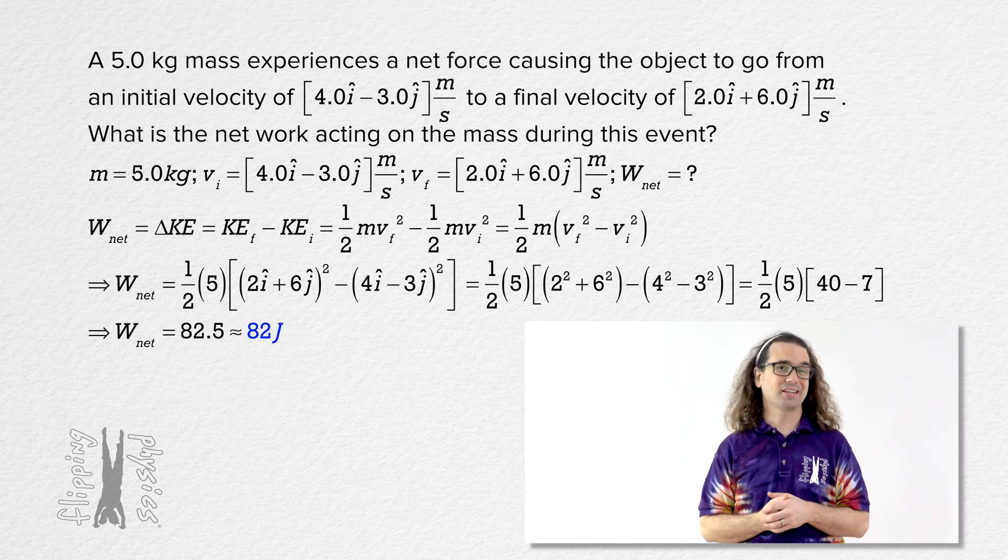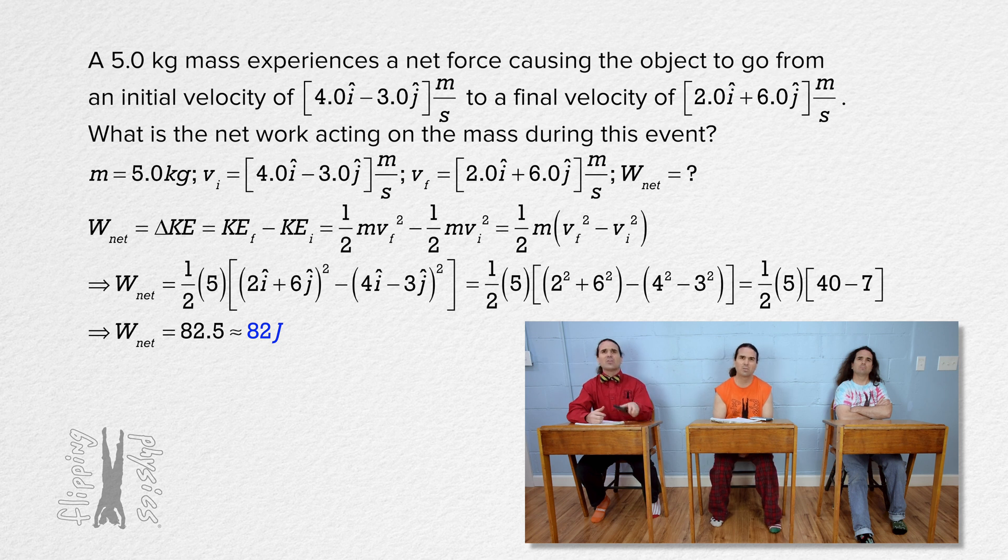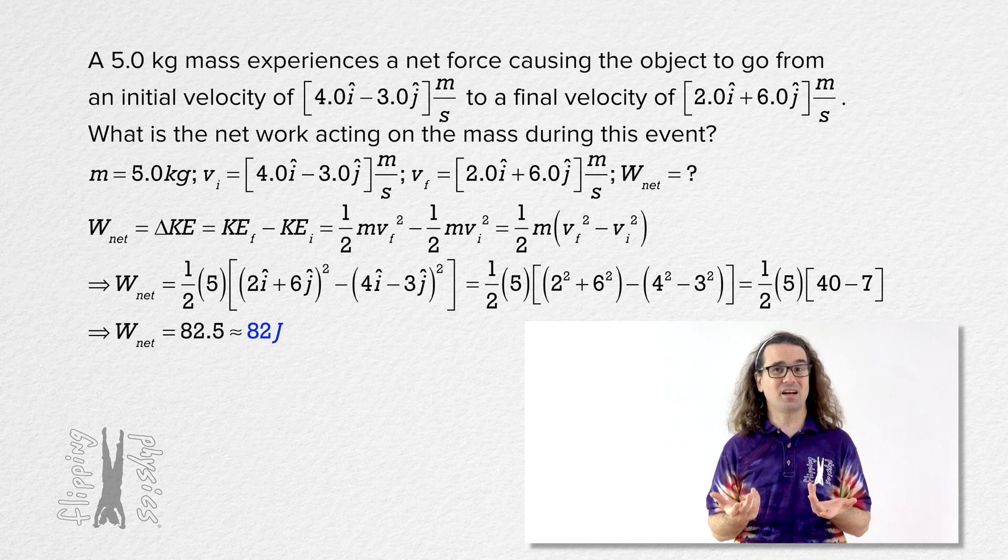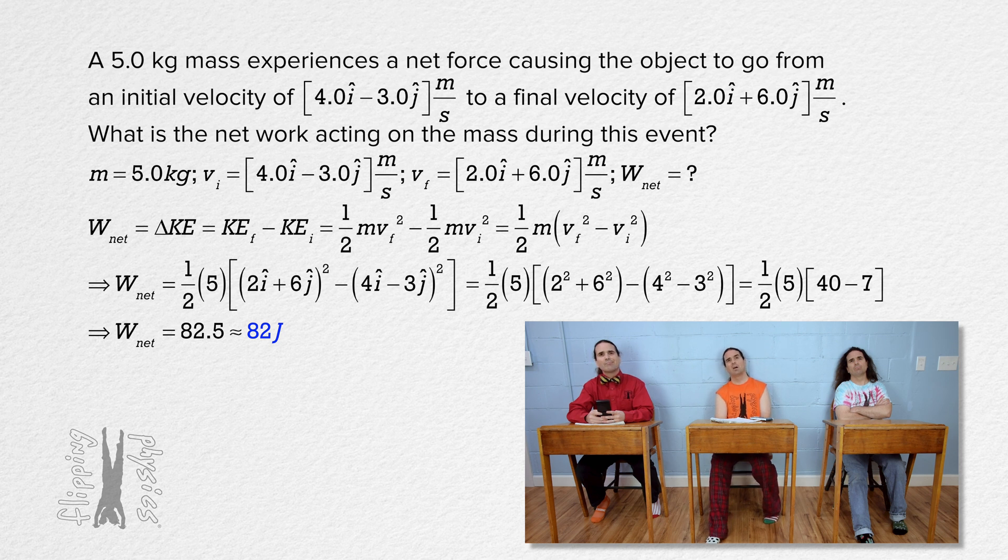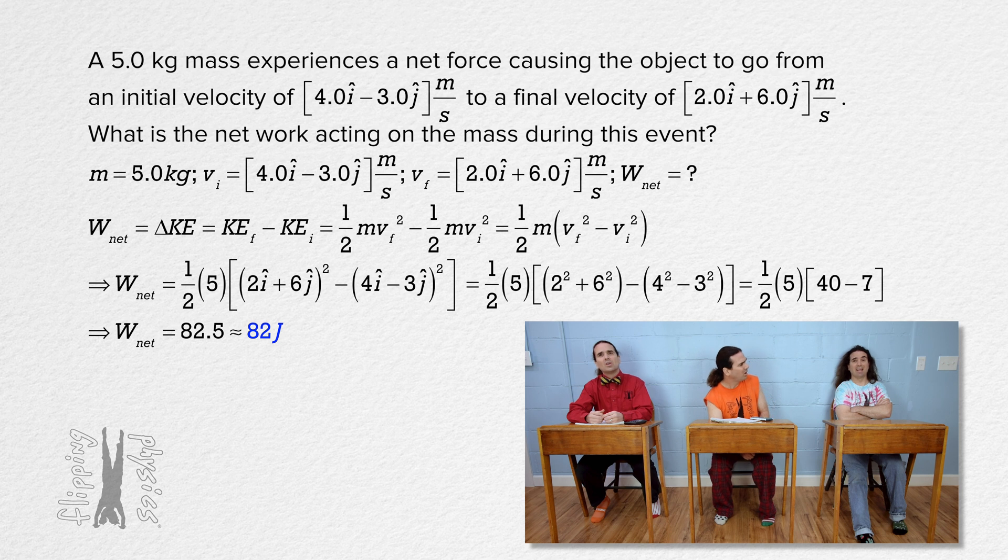This is not correct. That's what I got with my calculator. Yeah, me too. Well, it is still not correct. I bet it is a negative. Yeah, it's always a negative. Oh, it's the negative in the negative 3j in the initial velocity.